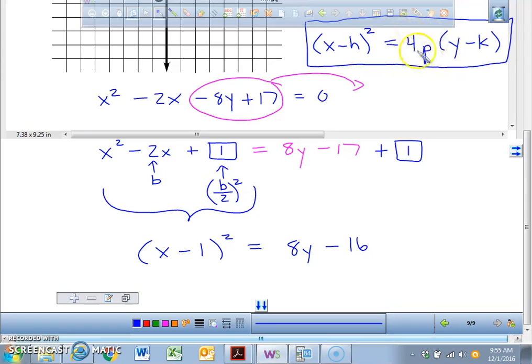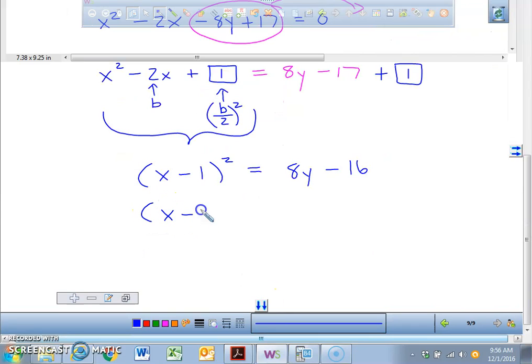We got to factor out the constant. Do you guys see how we just have 1y inside the parentheses? If you have 1y inside the parentheses, that means we have to factor this 8 out. So our final answer for our equation is x minus 1 squared equals 8, open parentheses, and put y minus 2. You had to factor the 8 out of the 8y, and you had to factor the 8 out of the negative 16. So basically what did I do? I divided that by 8, and I divided that by 8.